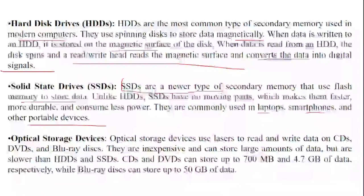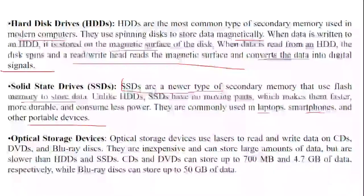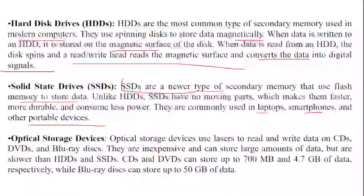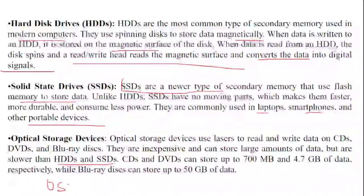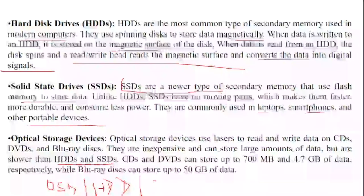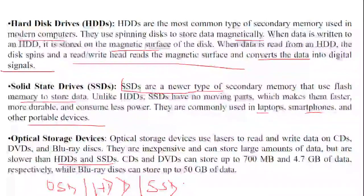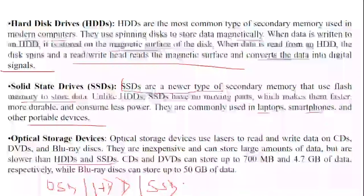Now let's move to optical storage devices. Optical storage devices use lasers to read and write data — used with CDs, DVDs, and Blu-rays. They are inexpensive and can store large amounts of data, but are slower than HDDs and SSDs. In terms of speed ranking from slowest: optical storage devices, then HDDs, then SSDs at the fastest.